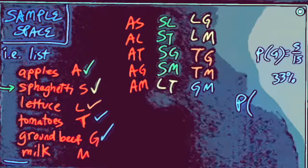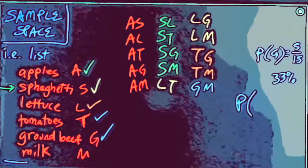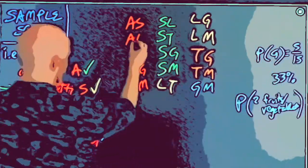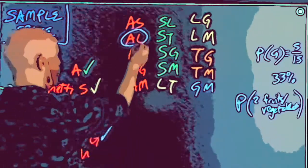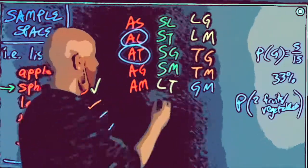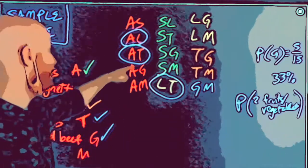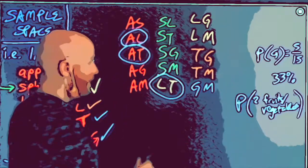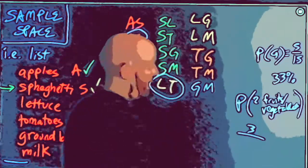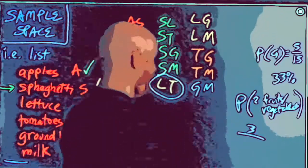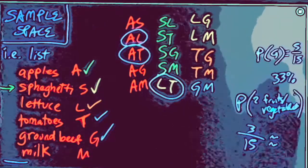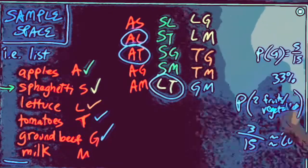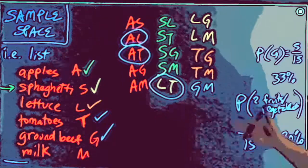A different question: what's the probability that I forget two fruits and vegetables? Looking through the list — apple and lettuce, apple and tomato, lettuce and tomato — that's three ways. Three divided by 15, times 100, is 20%. There's a 20% chance I forget two fruits and vegetables. That's sample spaces — organized lists.